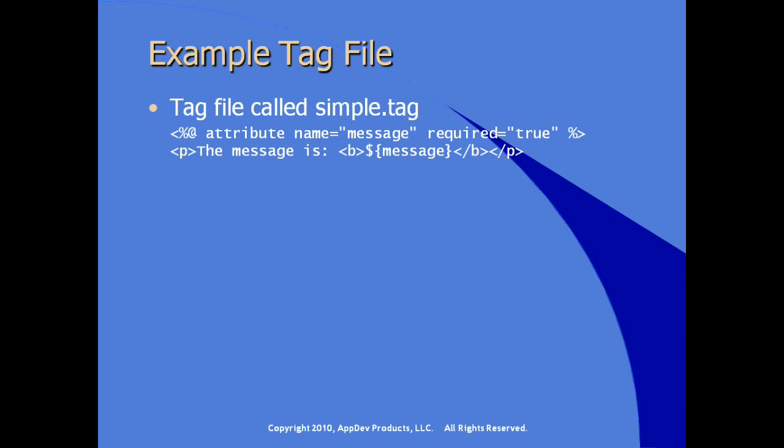It's simply a JSP file with JSP tags — the percent-at tag directive — with the attribute name and required, and then whatever behavior we want this tag to do, written in JSP syntax. In this case, the message is expressed using a JSP expression.